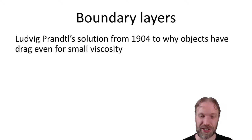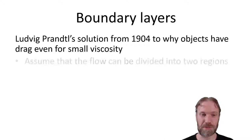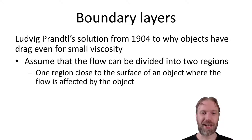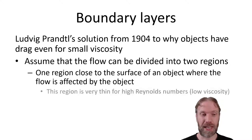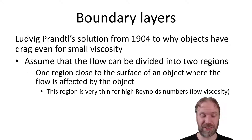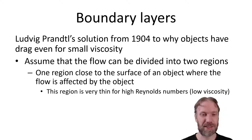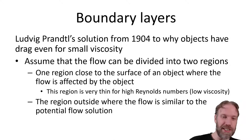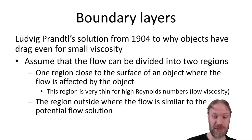Closest to the surface, viscosity always creates a small region with different flow velocity than the potential flow solution - it becomes smaller as viscosity decreases, but will always exist. Outside this boundary layer, we can approximate the flow as the potential flow solution. That's the core of the boundary layer idea. There are two types of boundary layers: laminar and turbulent. The flow builds up a boundary layer as soon as it reaches the object, and this boundary layer grows the further along we travel. At some point there is a transition where the boundary layer becomes turbulent - turbulent boundary layers are very chaotic.